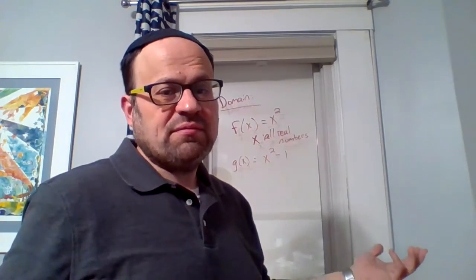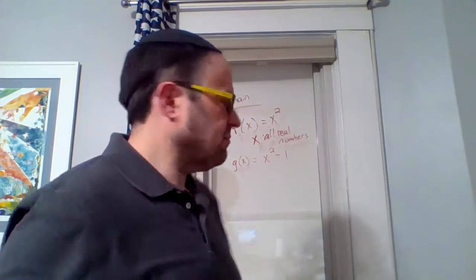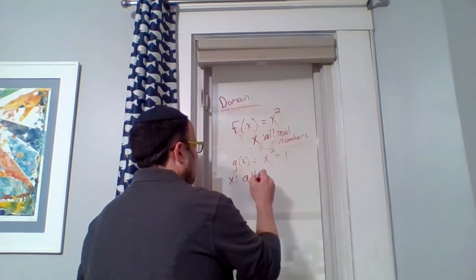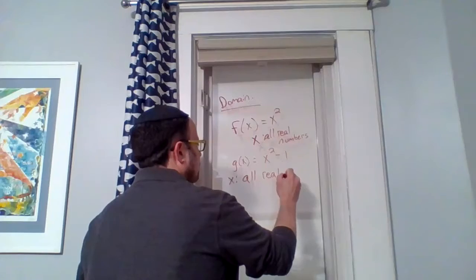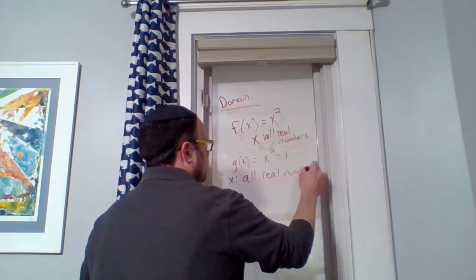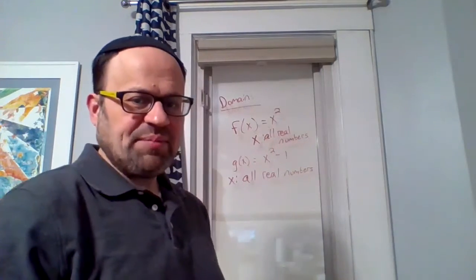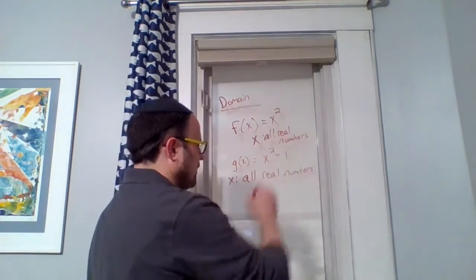A hundred squared minus one, is that allowed? Sure. So again, we would say all real numbers. Okay, and we can give plenty of examples of x squared functions.